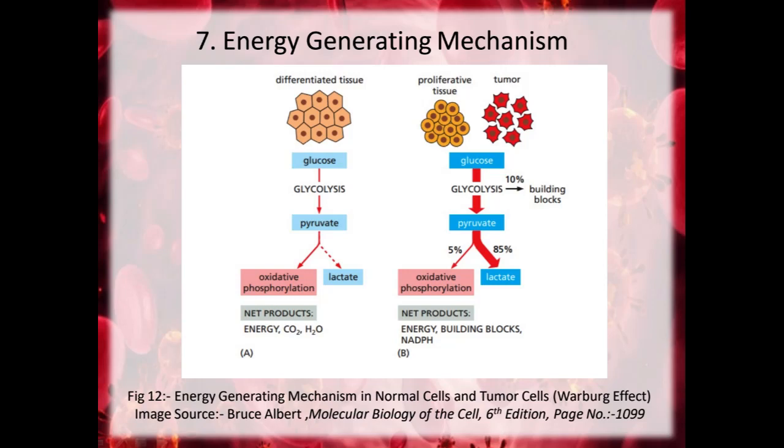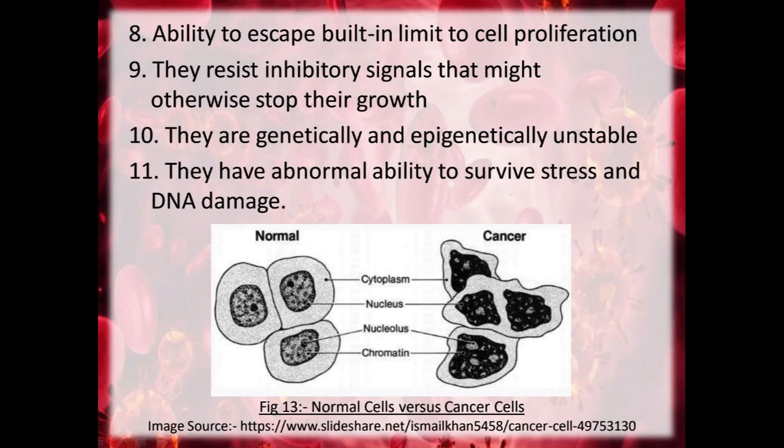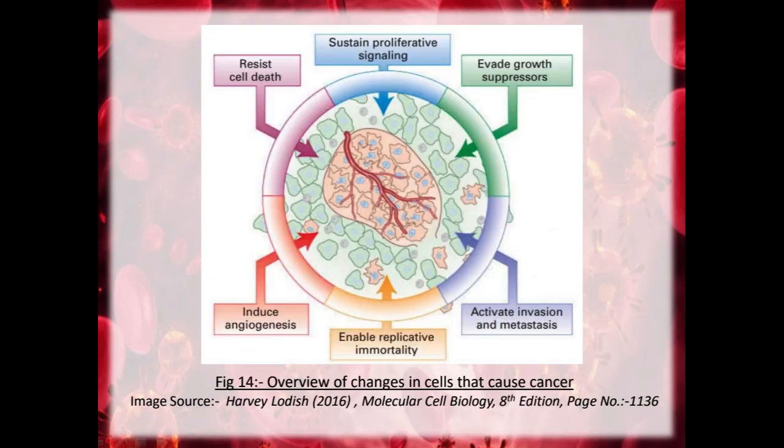So cancer cells have an ability to escape the built-in limit to cell proliferation. They resist inhibitory signals that might otherwise stop their growth. They are genetically and epigenetically unstable and have an abnormal ability to survive stress and DNA damage. This is an overview of changes in cells that cause cancer.